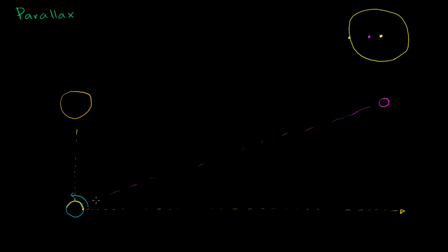So there's going to be some angle here. Whatever it is, let's just call it theta. And when I talk about the angle, I'm talking about if you measure from one side of the horizon to the other side of the horizon, you're essentially looking halfway around the Earth — that would be 180 degrees. So you could literally measure what this angle is right over here.